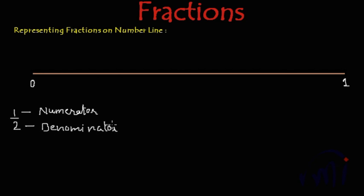To represent any fraction on the number line, what you have to see is the denominator. What is the denominator here? Denominator here is 2. This is very important — this tells us in how many equal parts each unit or whole has to be divided. Since the denominator is 2, I will divide this number line into two equal parts.